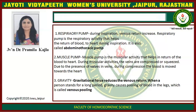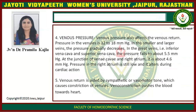Gravity: gravitational force reduces the venous return when a person stands for a long period. Gravity causes pooling of blood in the legs, which is called venous pooling. Venous pressure also affects the venous return. Pressure in veins is low compared to arteries, but in larger veins pressure gradually decreases — in the inferior vena cava and superior vena cava the pressure is only 5.5 mmHg. At the junction of the veins and right atrium, pressure becomes very low at 4.6 mmHg. Pressure in the right atrium is slightly lower still and is altered during cardiac action.